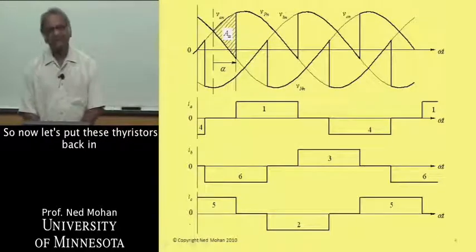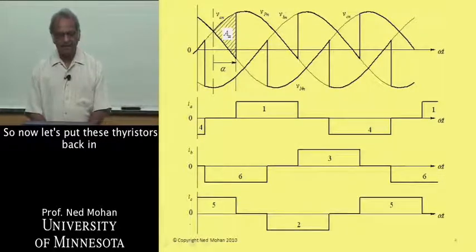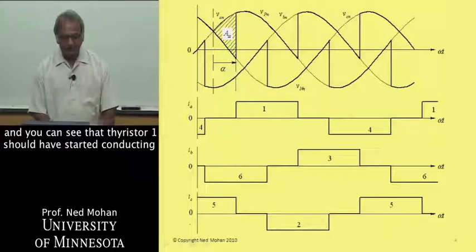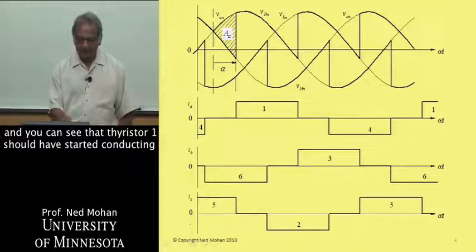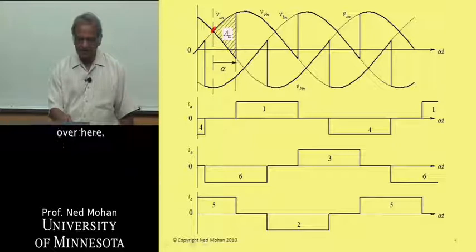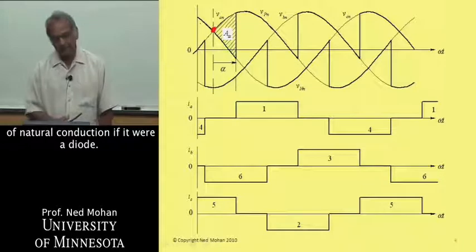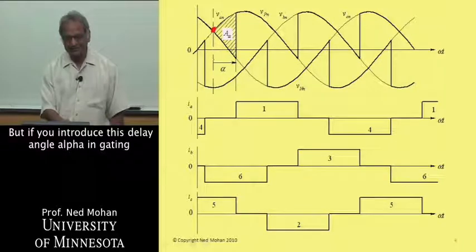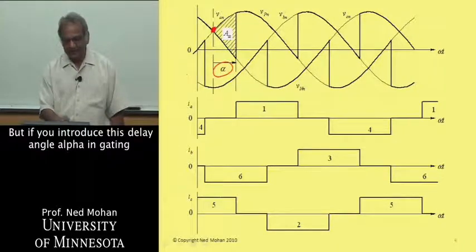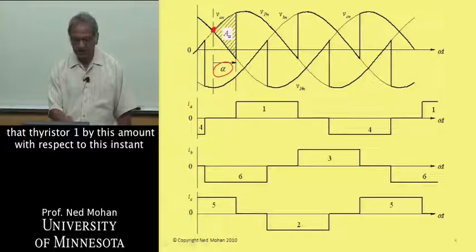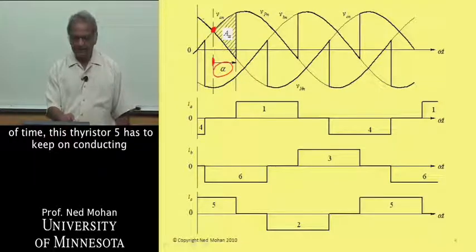Now let's put these thyristors back in. You can see that thyristor 1 should have started conducting over here. That would have been an instant of natural conduction if it were a diode. But if you introduce this delay angle alpha in gating that thyristor 1 by this amount with respect to this instant of time, then this thyristor 5 has to keep on conducting.